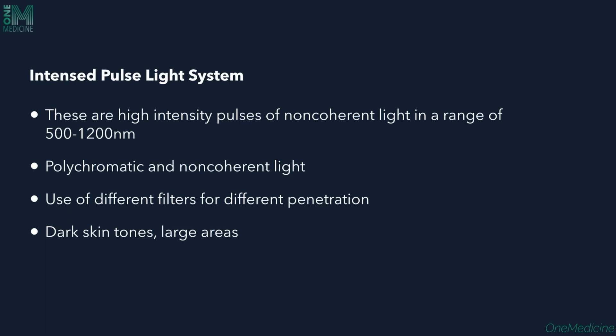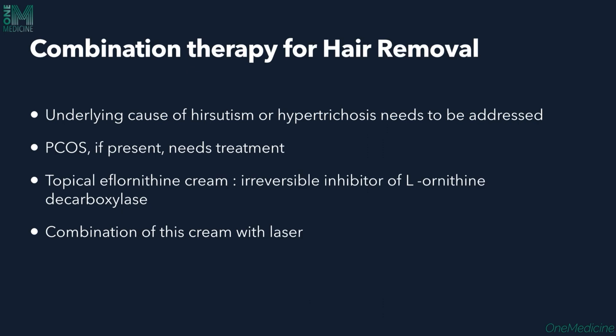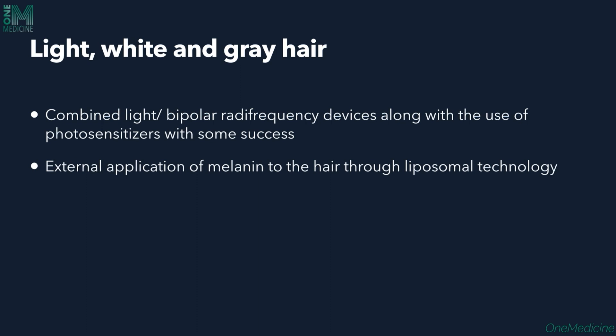Intense pulsed light (IPL) can also be used — these are high-intensity pulses of non-coherent light in a range of 500 to 1200 nm. The IPL beam is polychromatic and non-coherent, whereas normal lasers are monochromatic and coherent. Different filters are used for different penetration depths. Dark tones in larger areas can be treated with the IPL system. Combination therapy is also effective: underlying hormonal causes of hypertrichosis need to be addressed. Topical eflornithine cream causes irreversible inhibition of L-ornithine decarboxylase and reduces hair growth, and can be used alongside laser. For light, white, or grey hair, combined light or bipolar radiofrequency devices with photosensitizers, and external application of melanin via liposomal technology, have been tried.